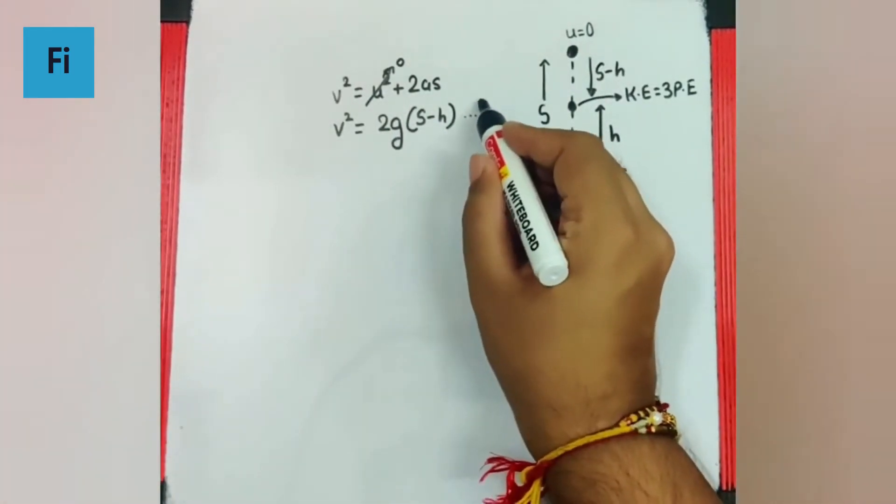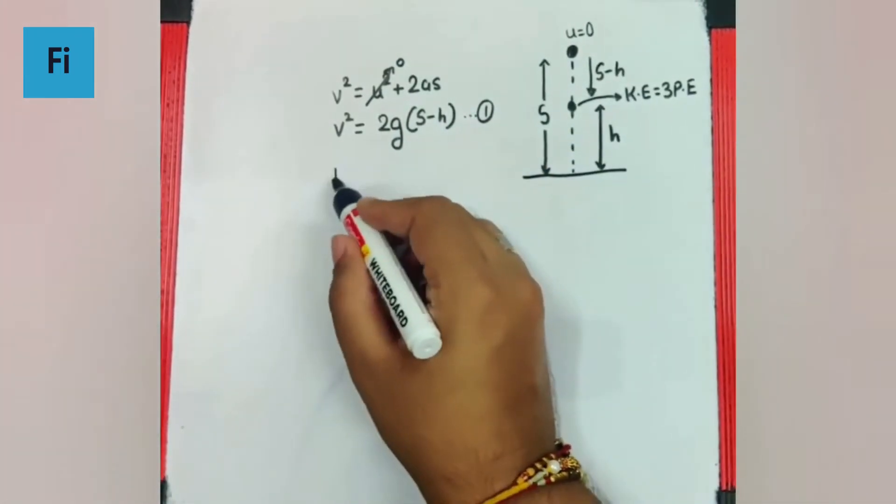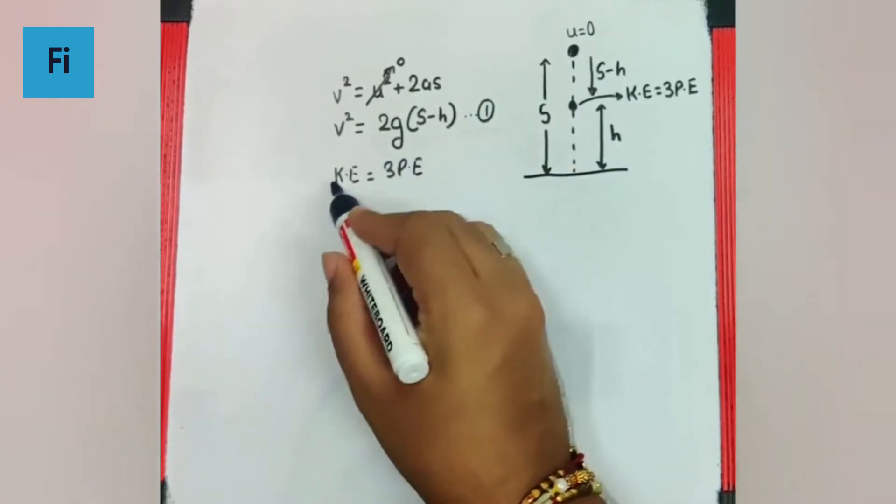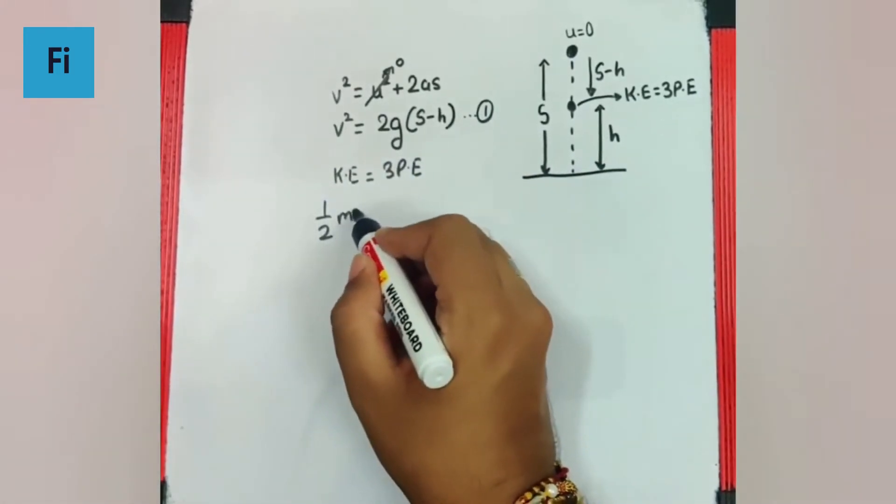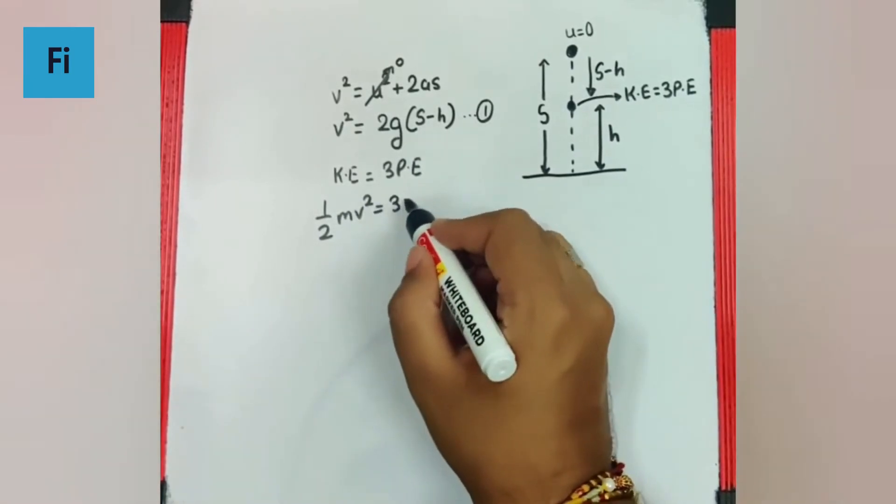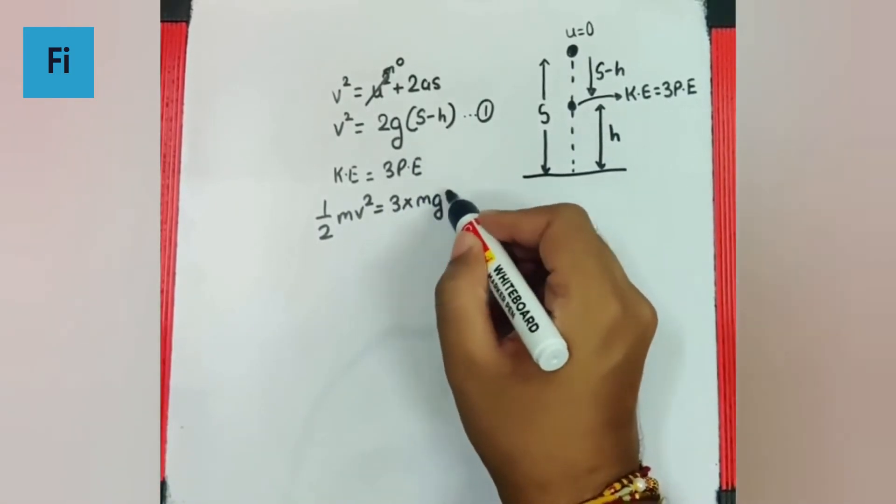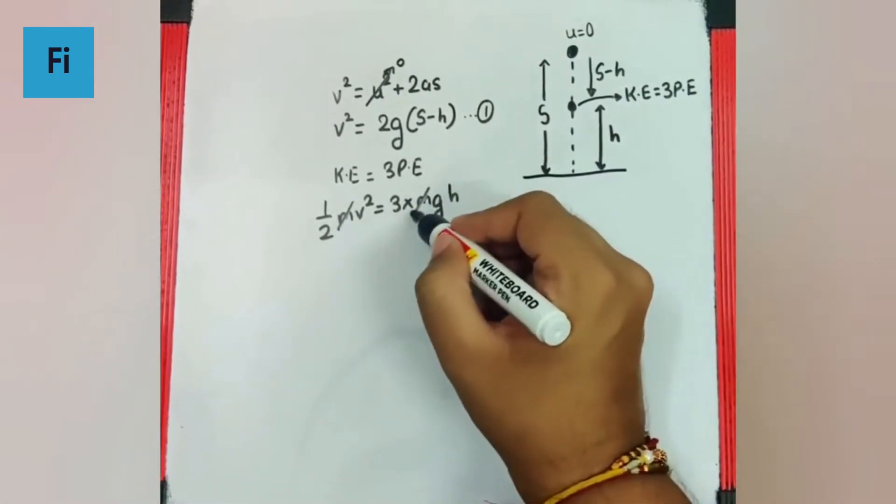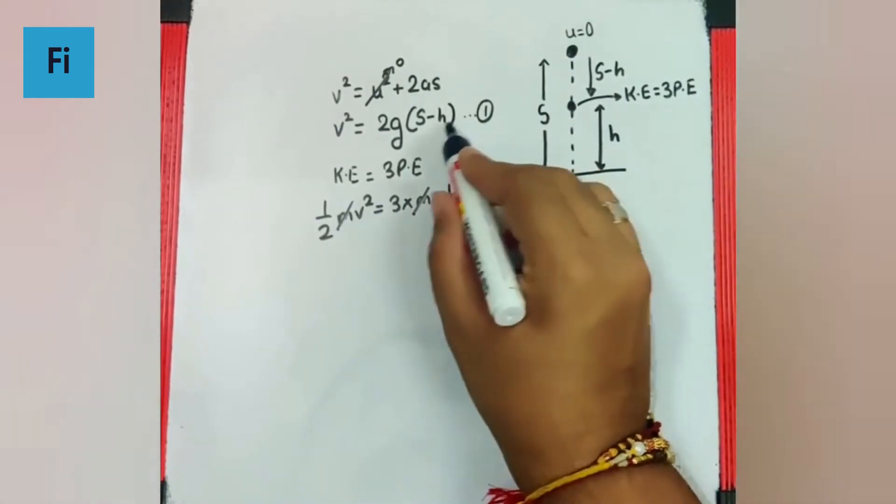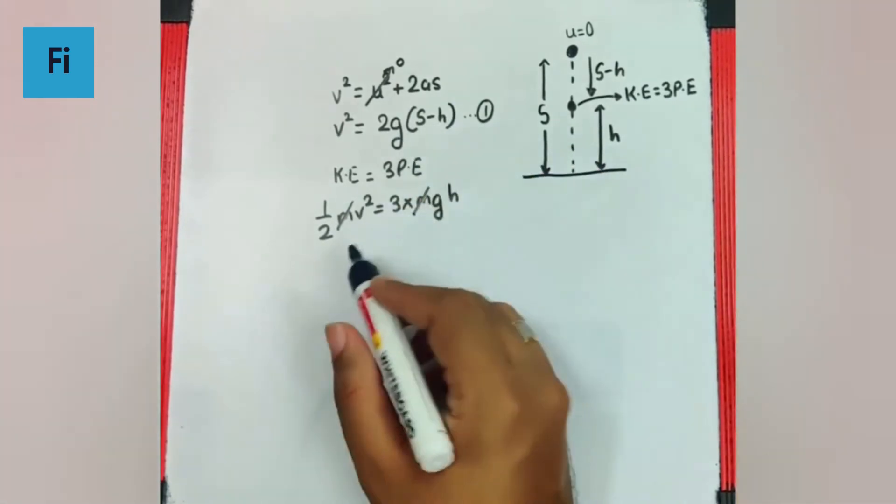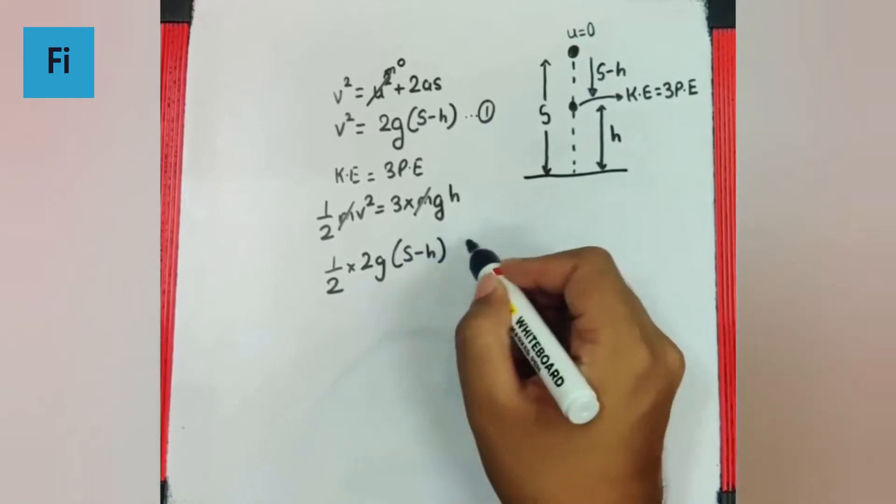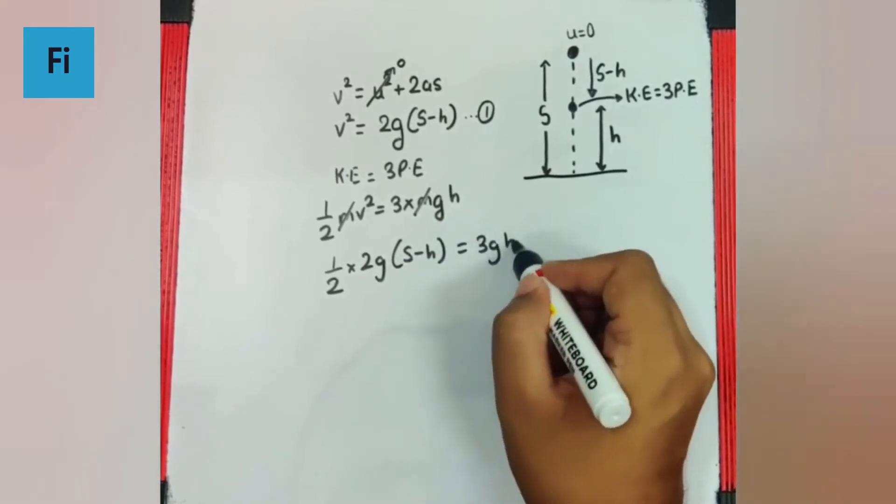So now let's say this is equation number one. Now we know kinetic energy is 3 times the potential energy. h is the height from the surface. So kinetic energy is going to be half mv square and 3 times potential energy is going to be mgh. h is the height from the surface. So obviously m gets cancelled. I am going to put v square as this because I have equation number one over here. So half into 2g bracket s minus h is equal to 3gh.